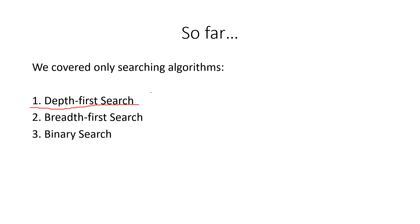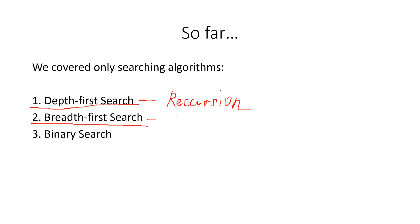Depth first search goes as deep as possible and is mostly implemented using recursion. You can implement DFS iteratively through a for loop, but in that case you need to use an additional data structure which is a stack. The second one was BFS — breadth first search — which tries to first cover the closest vertices or nodes.